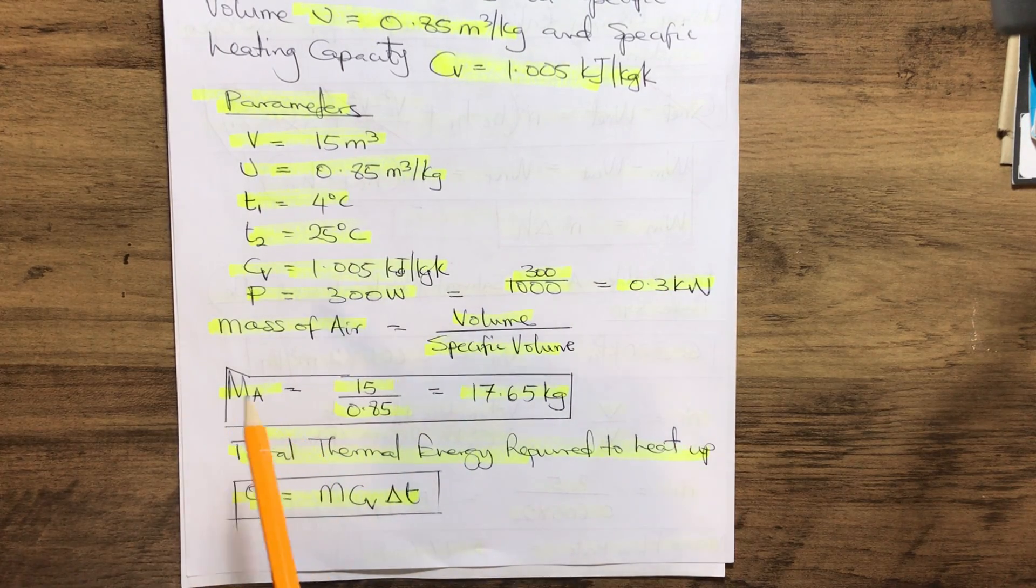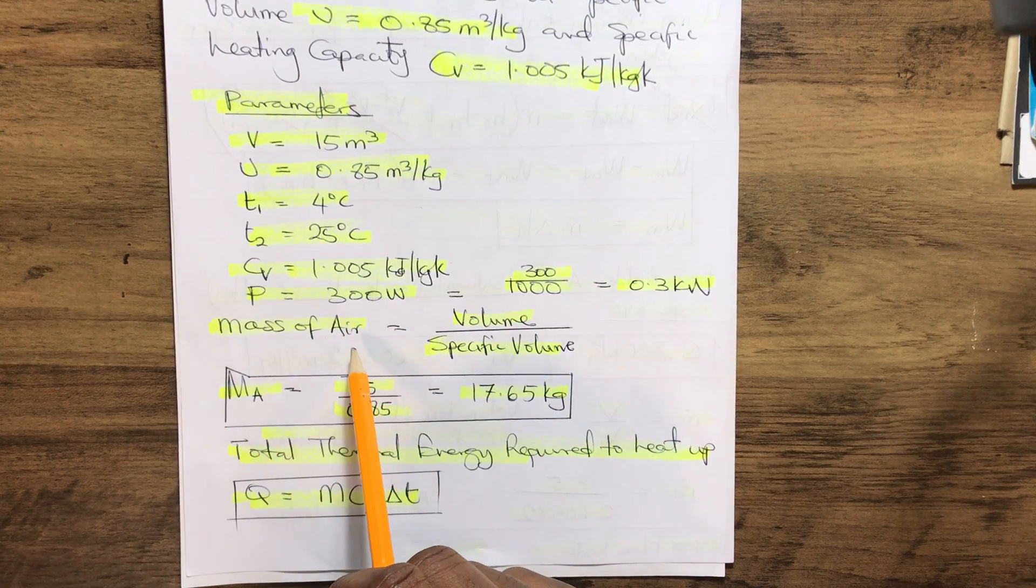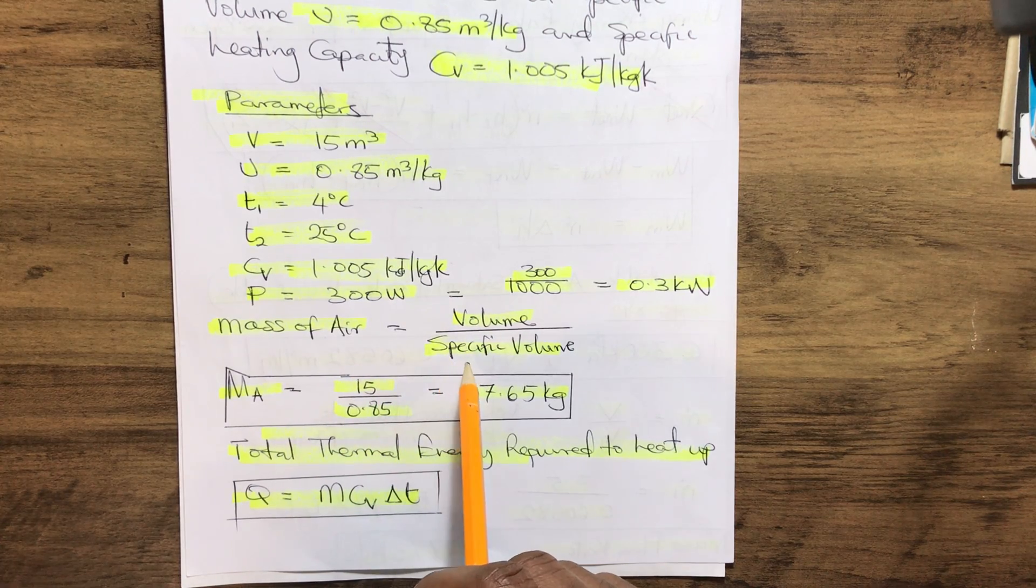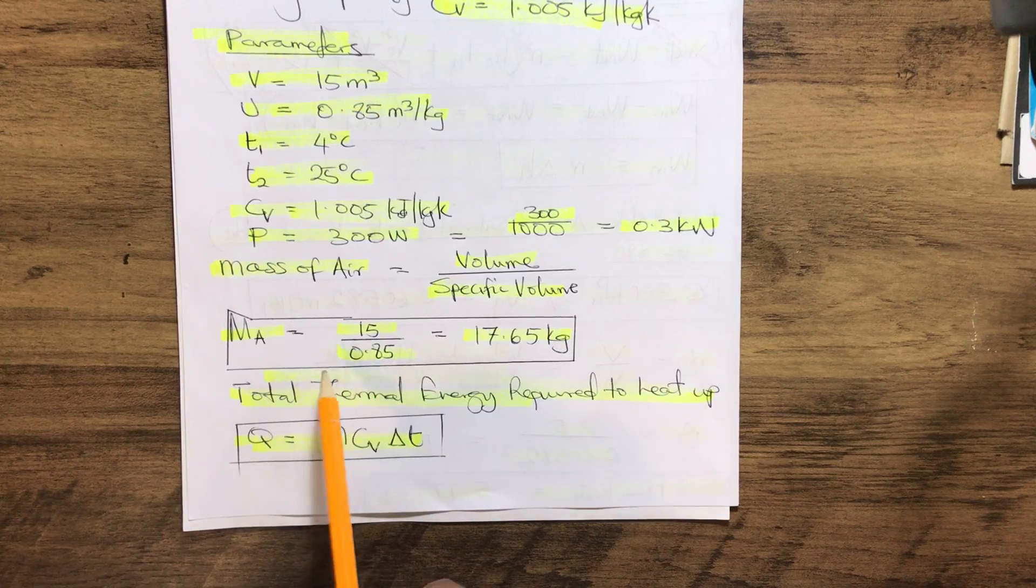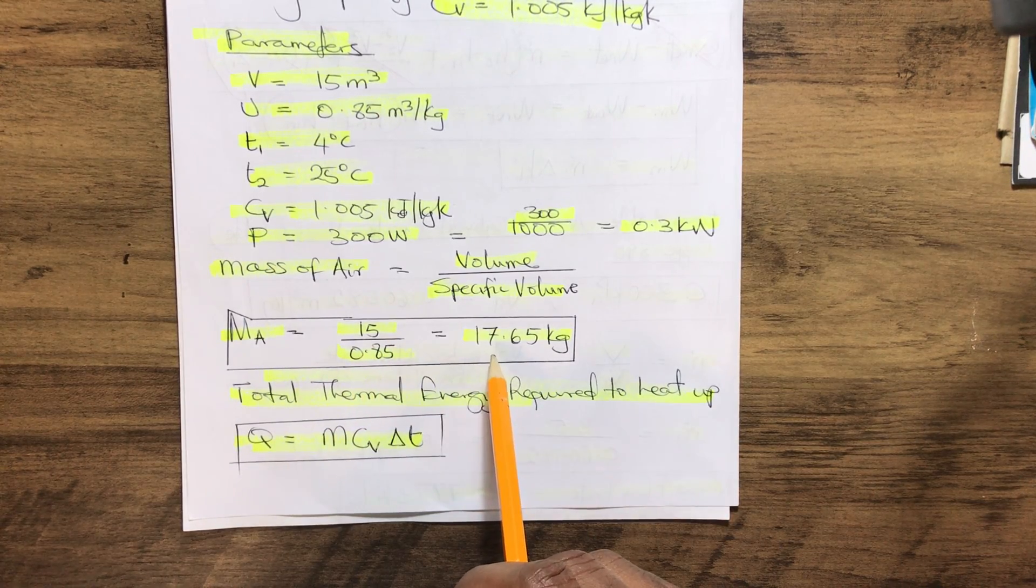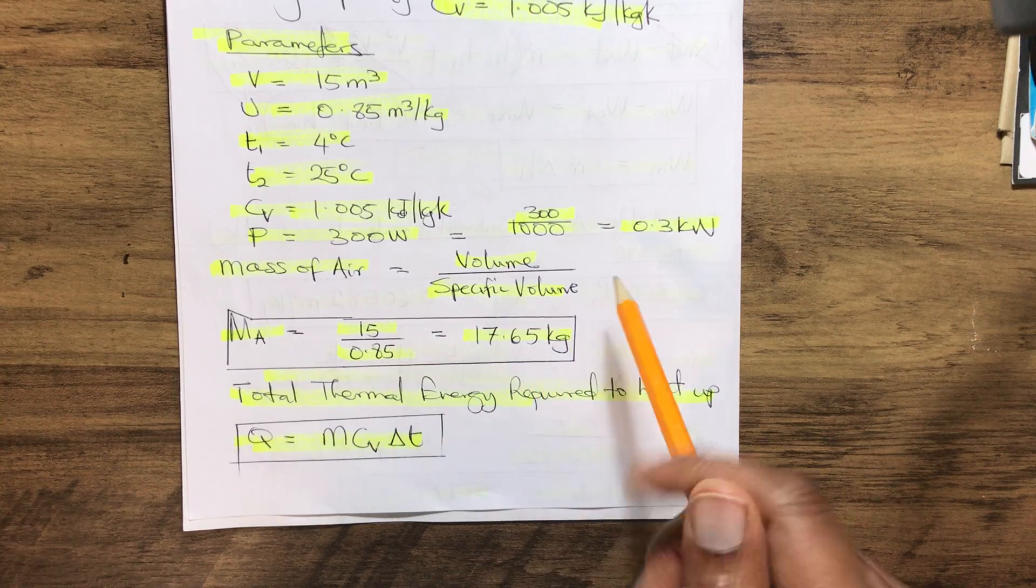Now let's find the mass of the air. The mass of air mathematically will be volume over specific volume, that gives us 15 over 0.85, giving us 17.65 kilograms.